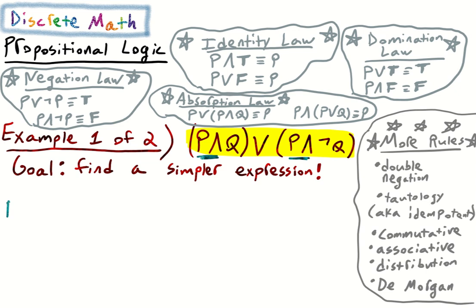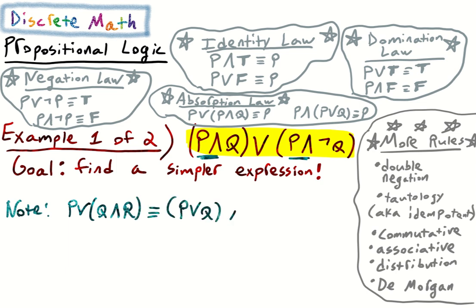Note that if we have something like p or (q and r), that's logically equivalent to (p or q) and (p or r). So notice 'p or', 'p or', 'p or' — let's apply that distribution.